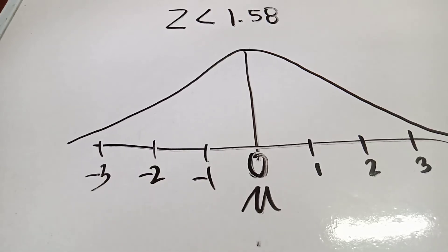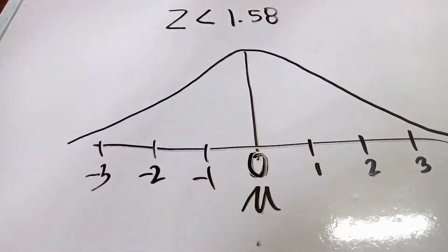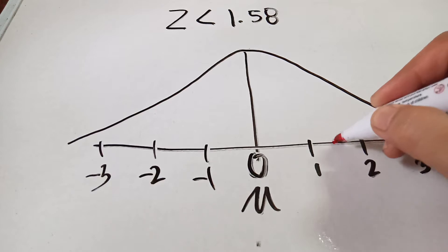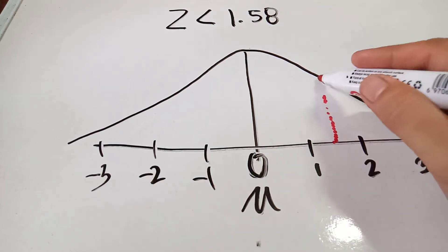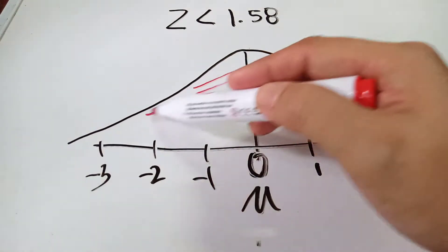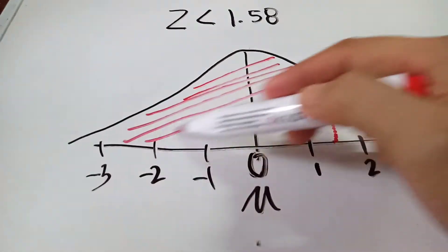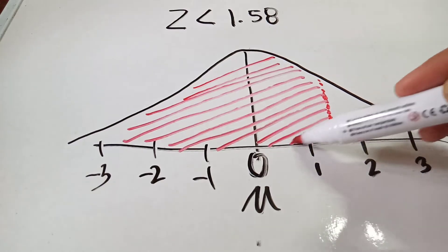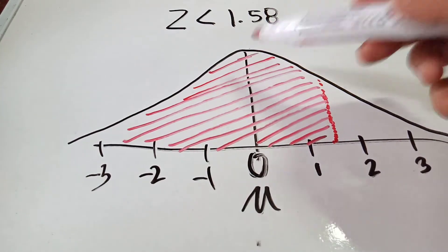We want to find the Z equivalent to 1.58. Since this is a less-than problem, we shade this part up to 1.58. We know this is 1.5 and a little bit more, so we put an imaginary line at 1.58.